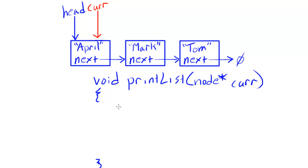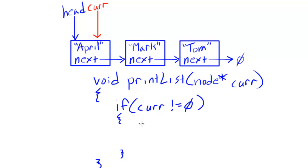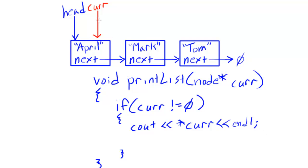For the recursive case we test whether our current pointer is not equal to null. If it's not equal to null, we know we're in our recursive case. The first thing we do is print out the contents of our node — a cout statement with the insertion operator, dereferencing our current pointer, and then endl. That handles the actual processing of our node depending on whatever cur is pointing at.